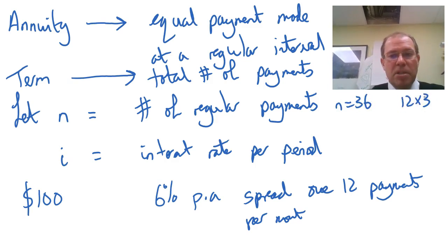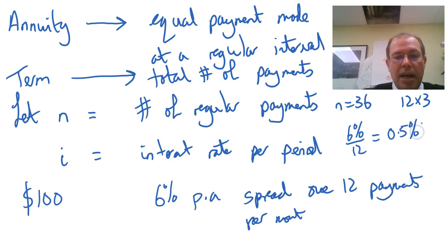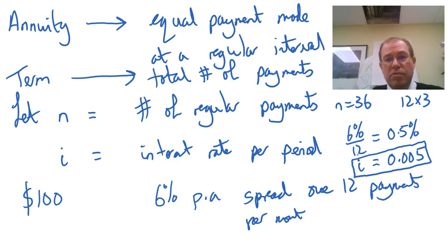So we've got 36 equal payments of $100. Now i is the interest rate per period. Because we've got 6% per annum, we divide the 6% by 12, which gives us 0.5%. Then we convert that into a rate, giving us 0.005. So our interest rate i is 0.005. In terms of how that relates to our geometric series, that means our multiplying factor would be 1.005, which is 1 plus i.